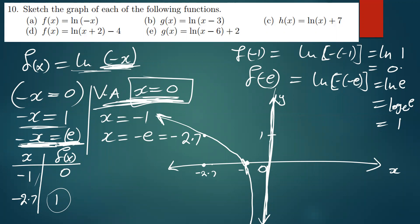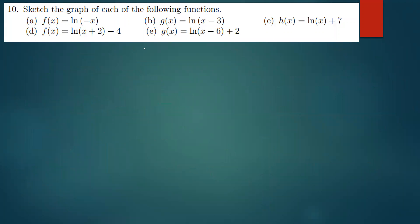If you haven't gotten the concept on the first one, I'm sure you'll get it as we proceed. That was actually the simplest on this question. The next one is g(x) = ln(x − 3).